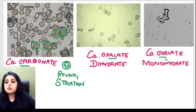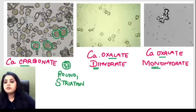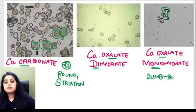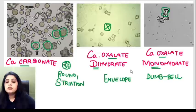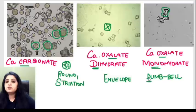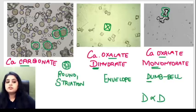Both of the next two are calcium oxalates. Calcium oxalate monohydrate looks like a dumbbell — that's how we describe it. Calcium oxalate dihydrate looks like an envelope. In the exam you can get confused, so remember: D is not for D — dihydrate is not dumbbell-shaped; dihydrate is envelope-shaped, monohydrate is dumbbell-shaped. Whenever confused, recall D and D cannot be kept together.